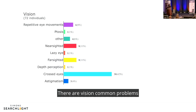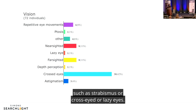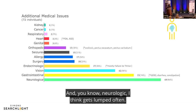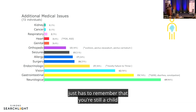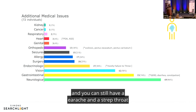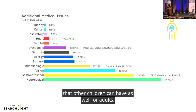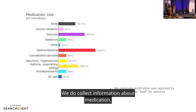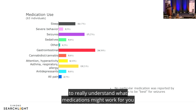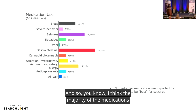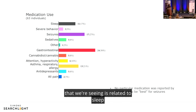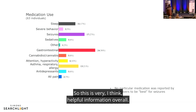Common vision problems seen across the group include strabismus, or crossed or lazy eyes. There are additional medical issues as well. It's important to remember that these children are still children — they can still have ear infections, strep throat, and all the other things any child can have. Medication data is also collected, and the goal is to understand which medications might work for some and not others. The majority of medications being used are related to sleep and gastrointestinal issues.